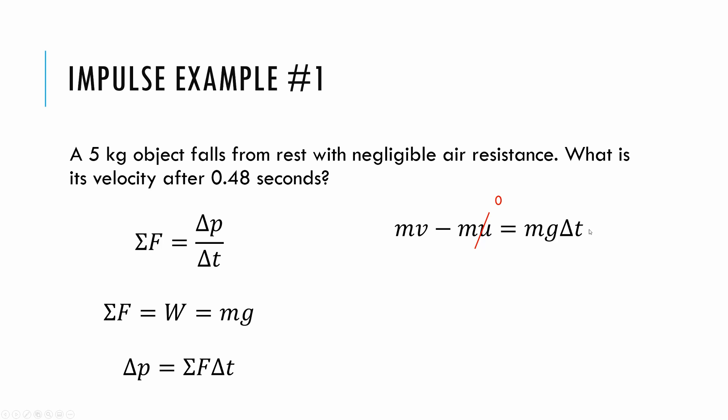I start from rest, so we're going to drop that term. Notice my masses cancel out. And I get my speed is g times delta t. You could solve this problem with kinematics, you could solve this problem with conservation of energy. You're going to find the same thing no matter what. So this is how we could apply this impulse and changing momentum in a definition of Newton's second law to solve a problem like this.